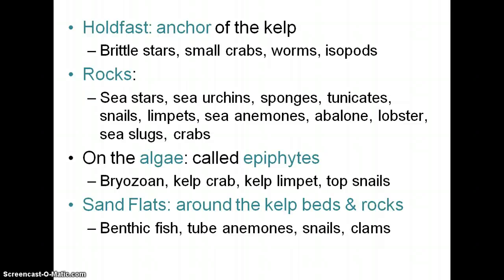Different parts of the kelp will harbor different animals. The holdfast at the bottom — the anchor of the kelp — can be huge, and you'll have tons of creatures living inside it: brittle stars, crabs, worms, and isopods that burrow in and live inside the holdfast. On the rocks surrounding that, you'll find all sorts of sea stars, sea urchins, sponges, tunicates, snails, limpets, sea anemones, abalone, lobster, sea slugs, and crabs — just lots of different types of things.